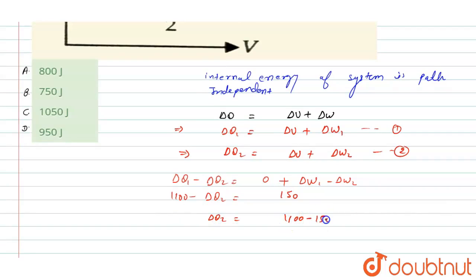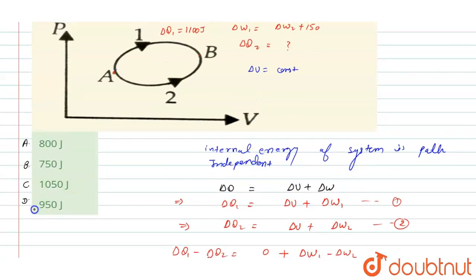And this will be equal to 950 joules, which is the change in heat energy. Now we have to see the options. We have option D, 950 joules. So we can write here, according to the options, option D is the correct answer for this question. I hope you understood the solution. Thank you.